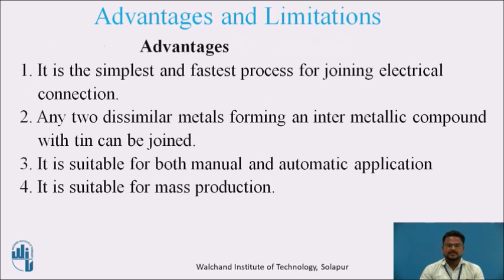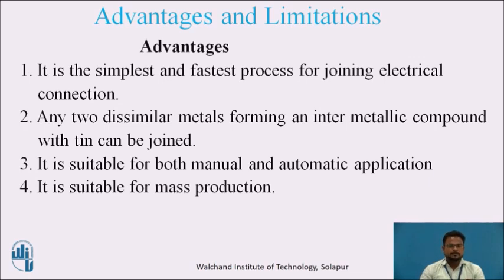Coming to the advantages of brazing. It is the simplest and fastest process for joining electrical connections, and brazing is widely used to join electrical connections today. Any two dissimilar metals forming an inert metal compound with tin or carbon can be joined. It is suitable for both manual and automatic applications and is also suitable for mass production in industry.